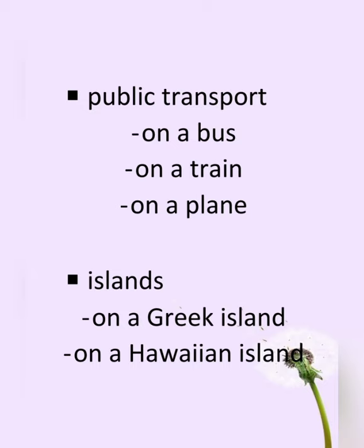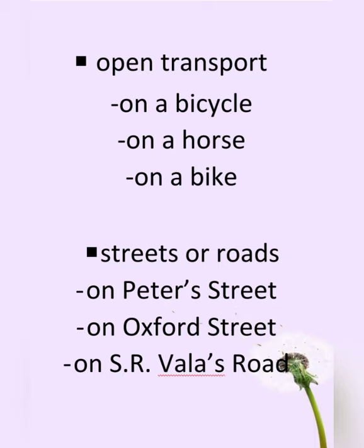We also use 'on' for public transport: on a bus, on a train, on a plane. And also when we talk about islands: I'm on an island, on a Greek island, on a Hawaiian island. For open transport: I'm on a bicycle, on a horse, on a bike.